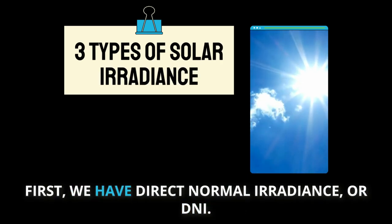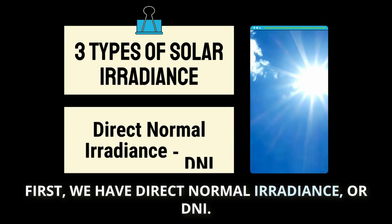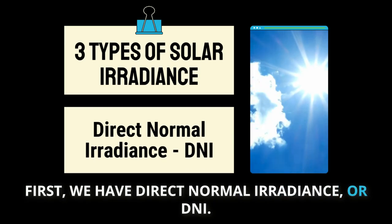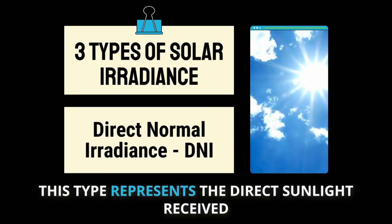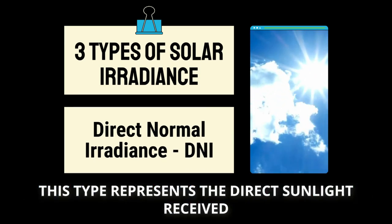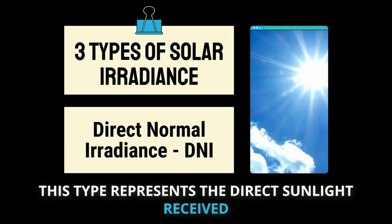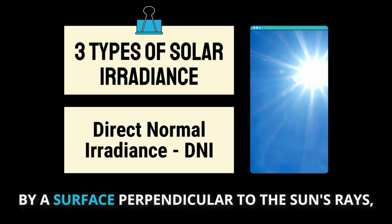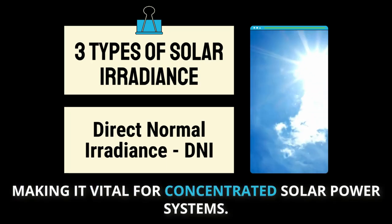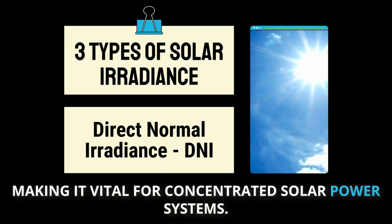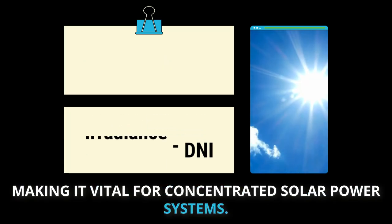First, we have Direct Normal Irradiance, or DNI. This type represents the direct sunlight received by a surface perpendicular to the sun's rays, making it vital for concentrated solar power systems.